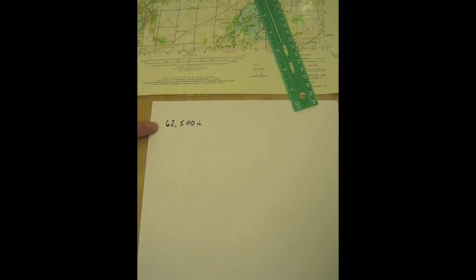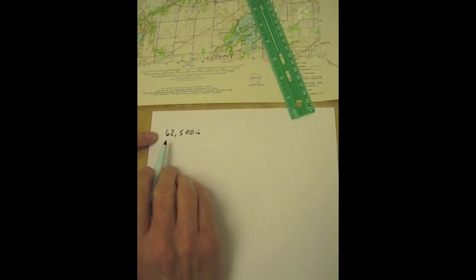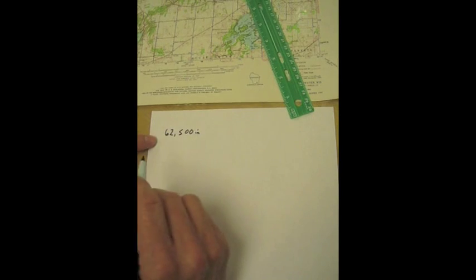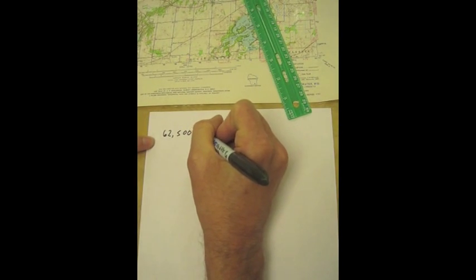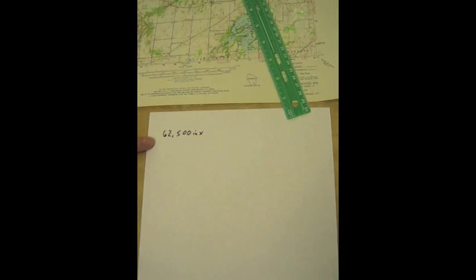So the fractional scale on this map is 1 to 62,500. So let's say we had 62,500 inches. That doesn't make much sense. So what we need to do is make it into something that's more useful to us, and we call that a verbal scale.